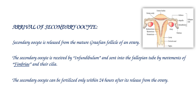The ovum is released from the matured Graafian follicle of an ovary. This process is called ovulation. The release of the secondary oocyte from the matured Graafian follicle is called ovulation. The secondary oocyte is received by the infundibulum and sent into the fallopian tube by movements of the fimbriae and their cilia.